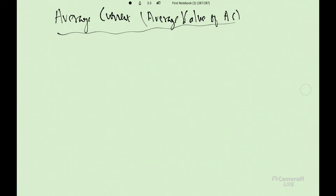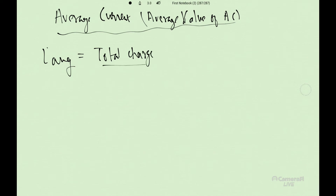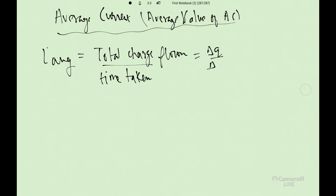Now I will move to the topic: average current, average value of AC. What is the formula? We have learned this in current electricity. The same formula will be used here. I average is equal to total charge flown divided by time taken.